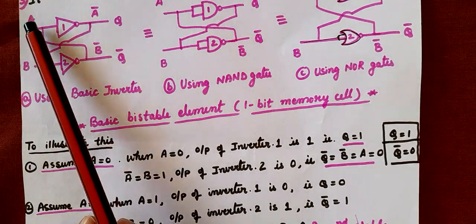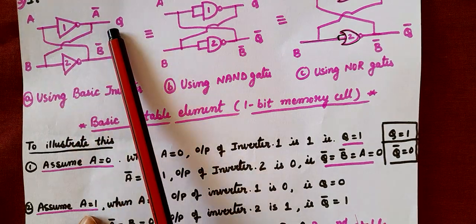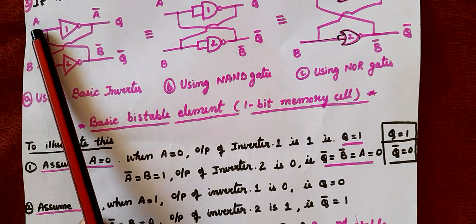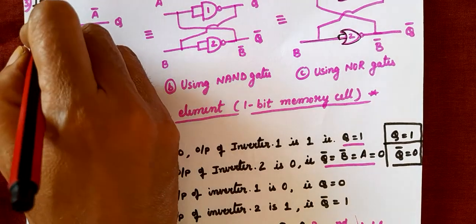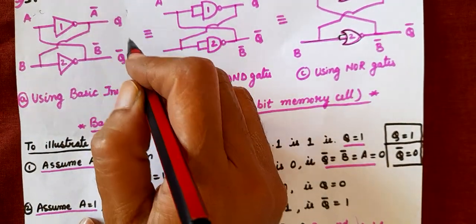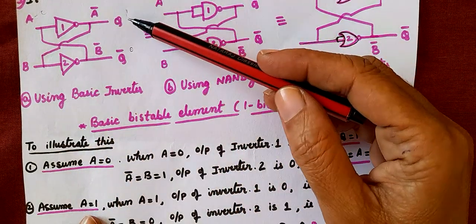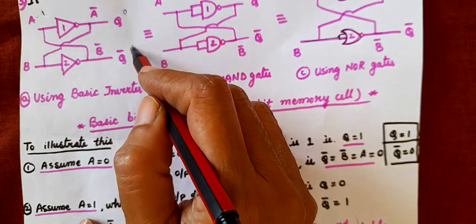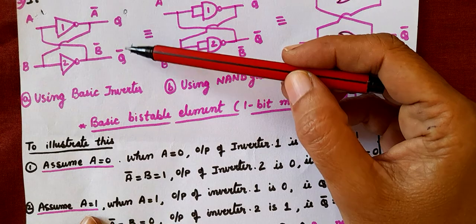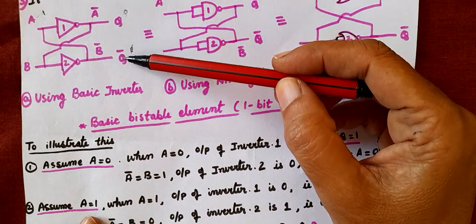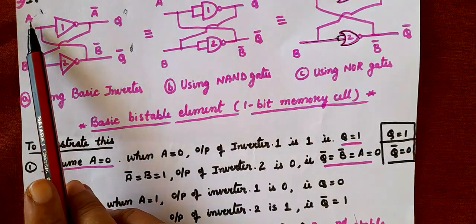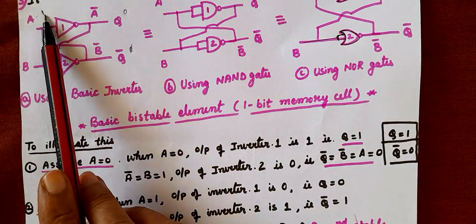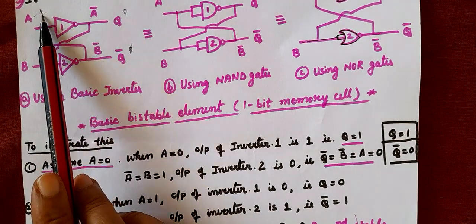We can explain it this way: when A is 0, Q is 1, so what will be Q-bar? It will be 0. When A is 0, Q is 1 and Q-bar is 0. When A is equal to 1, Q is 0 and Q-bar becomes 1. All the time these two output states should be complementary because they are Q and Q-bar. When A is 1, Q is 0 and Q-bar is 1; when A is 0, Q is 1 and so on.